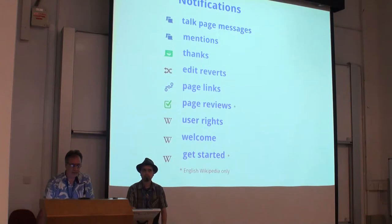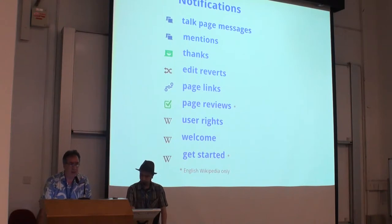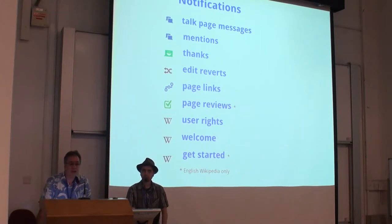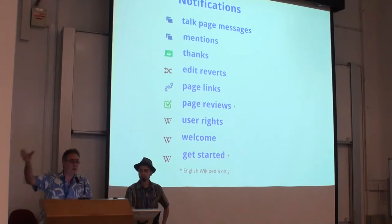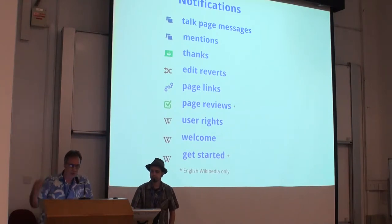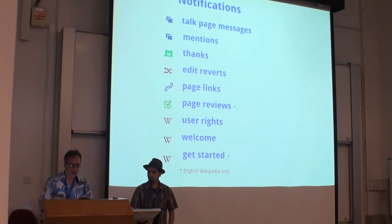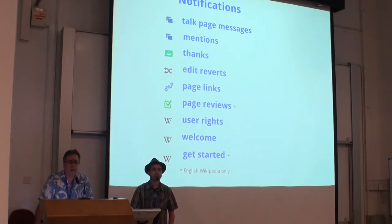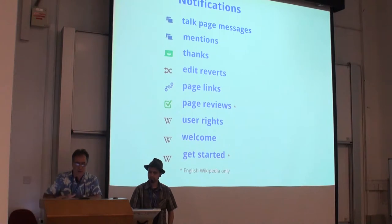There's a range of different notifications — about ten different notification categories. There's also page links: if you started a page on Wikipedia and someone links to it from another article page, you'll get a notification that your page has been linked. On the English Wikipedia, we also send you a notification if someone reviewed your page using the page curation tool. If your user rights change, like if you become an administrator or reviewer, you'll also get a notification.